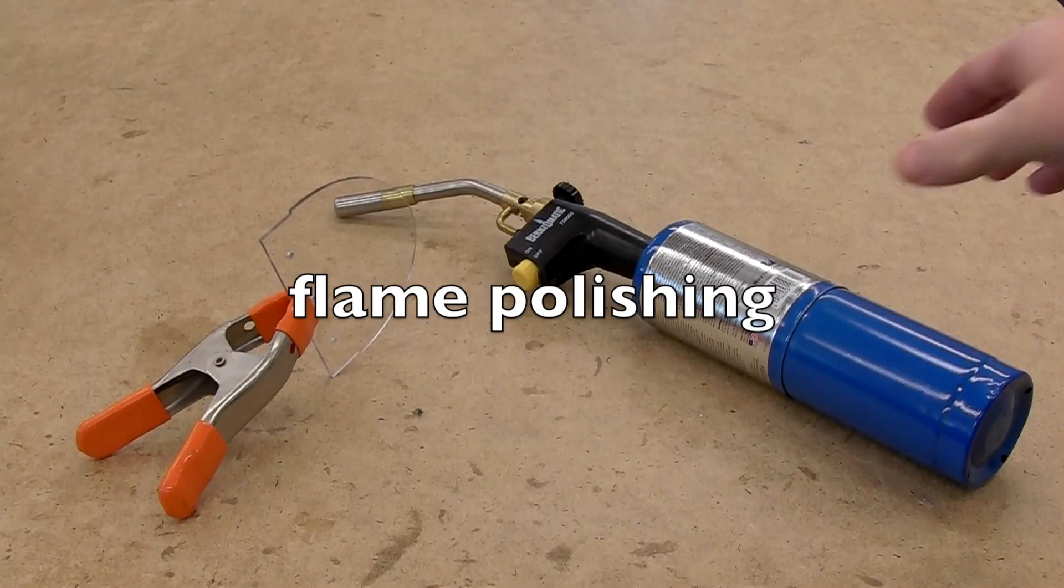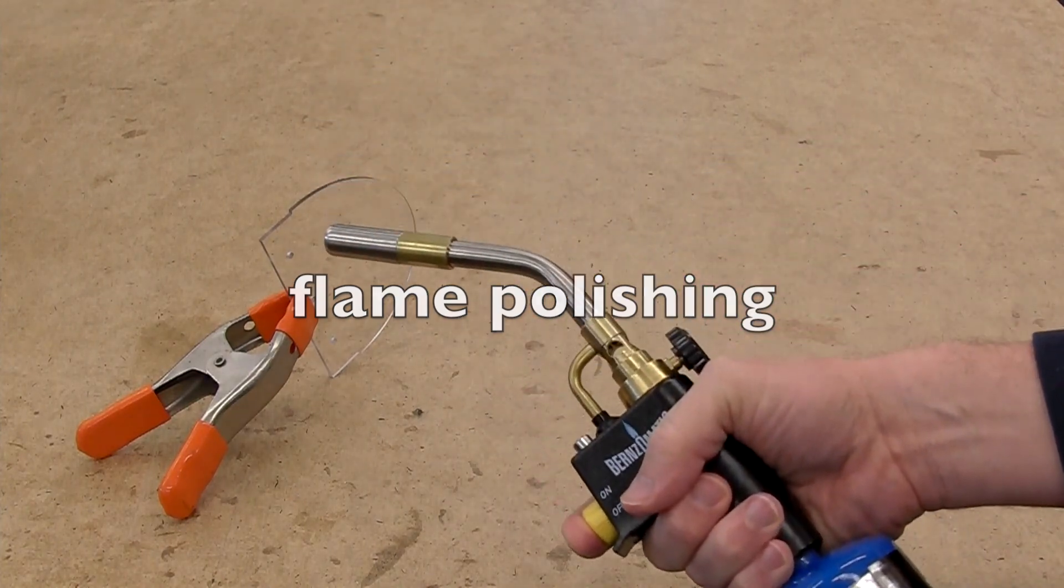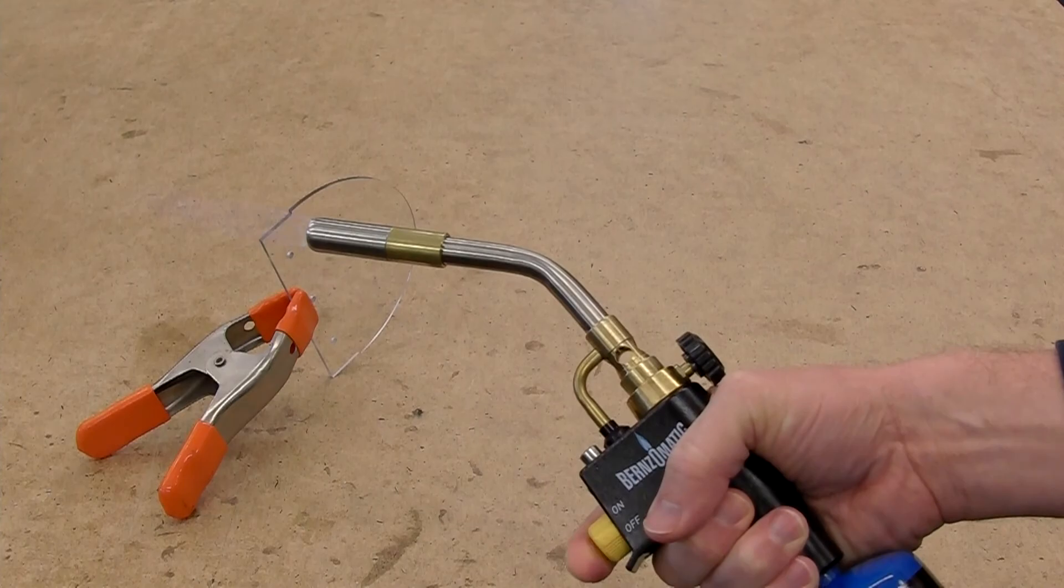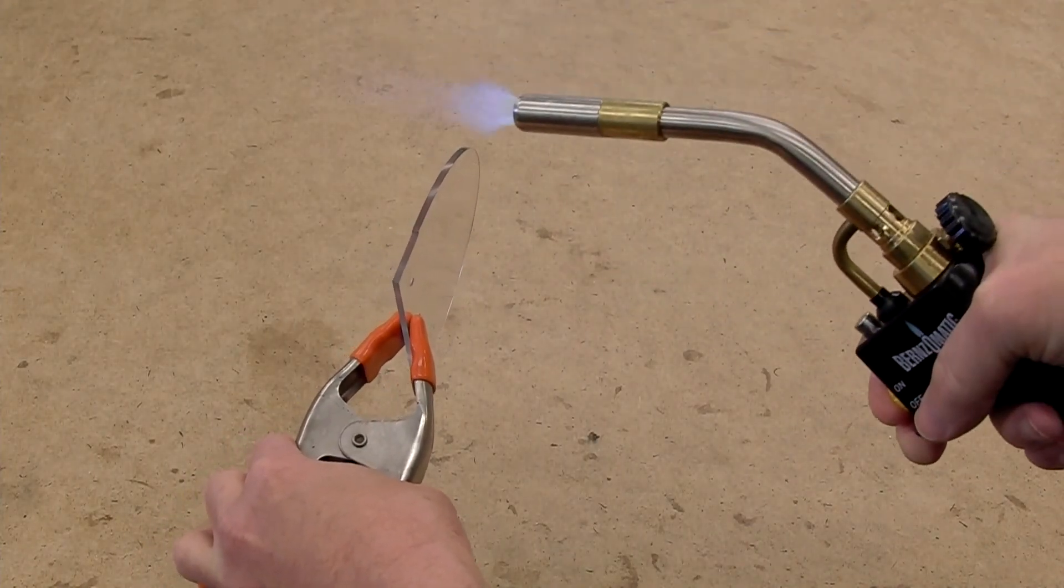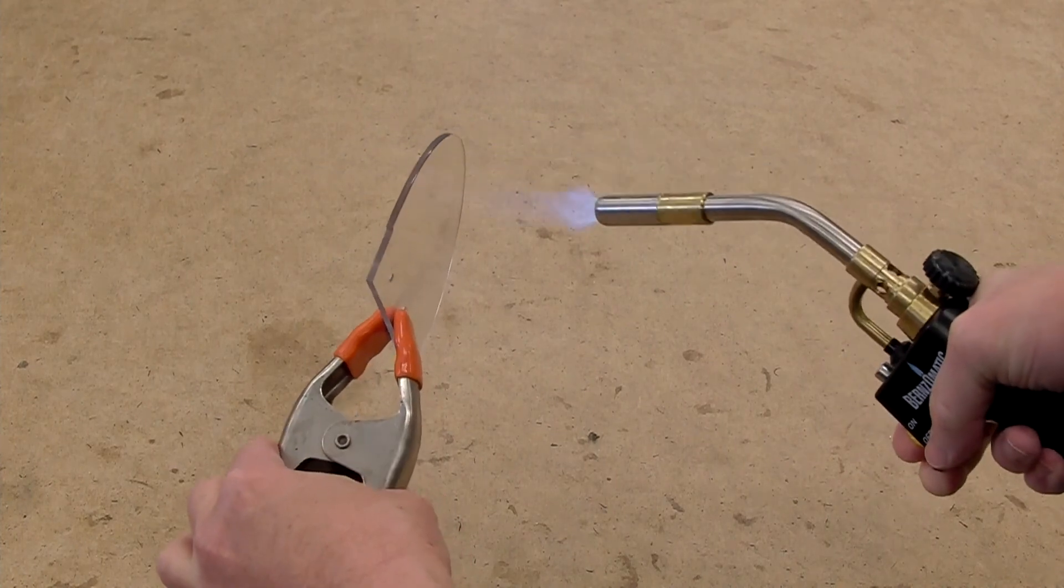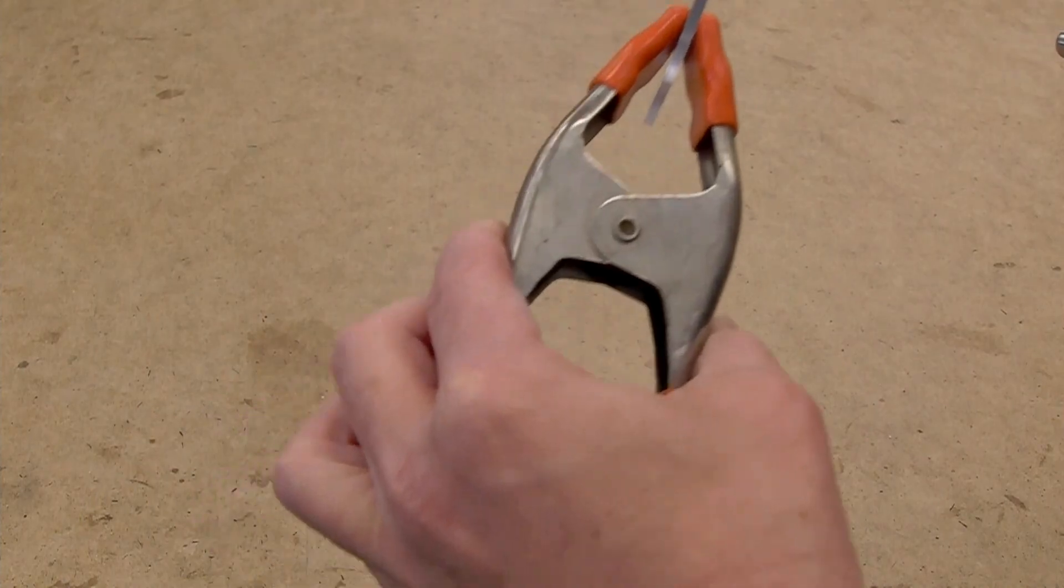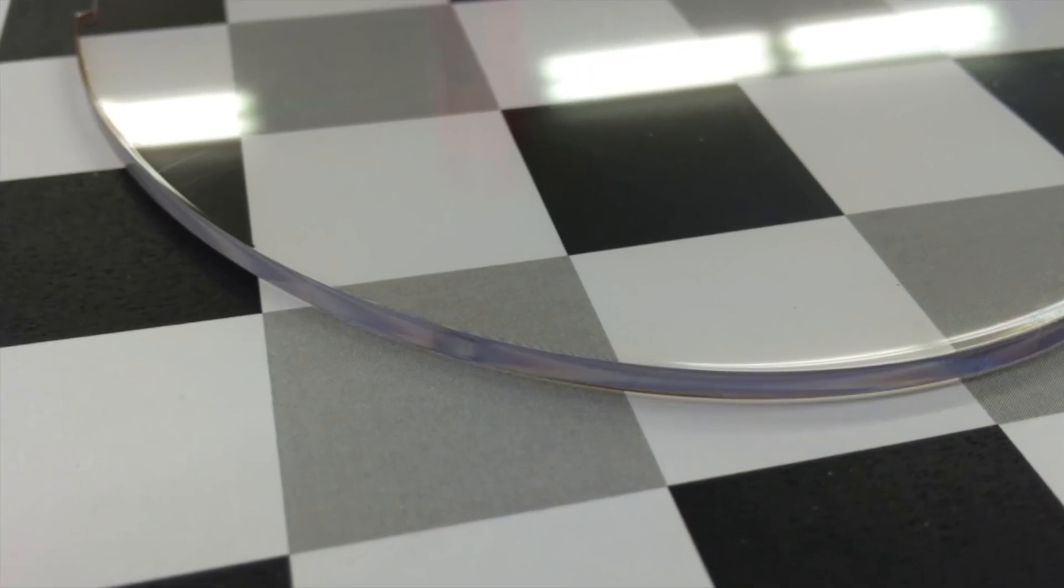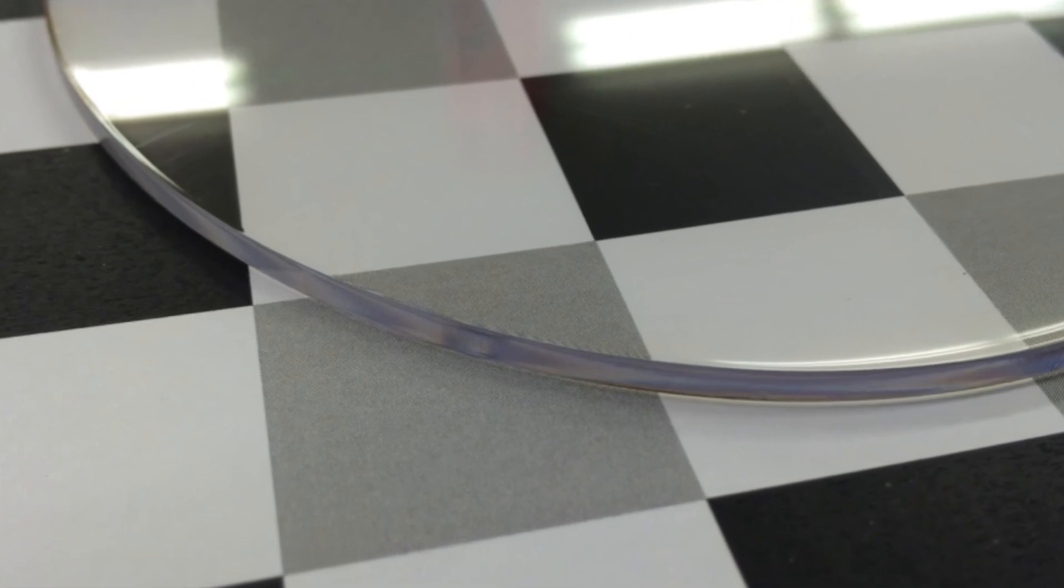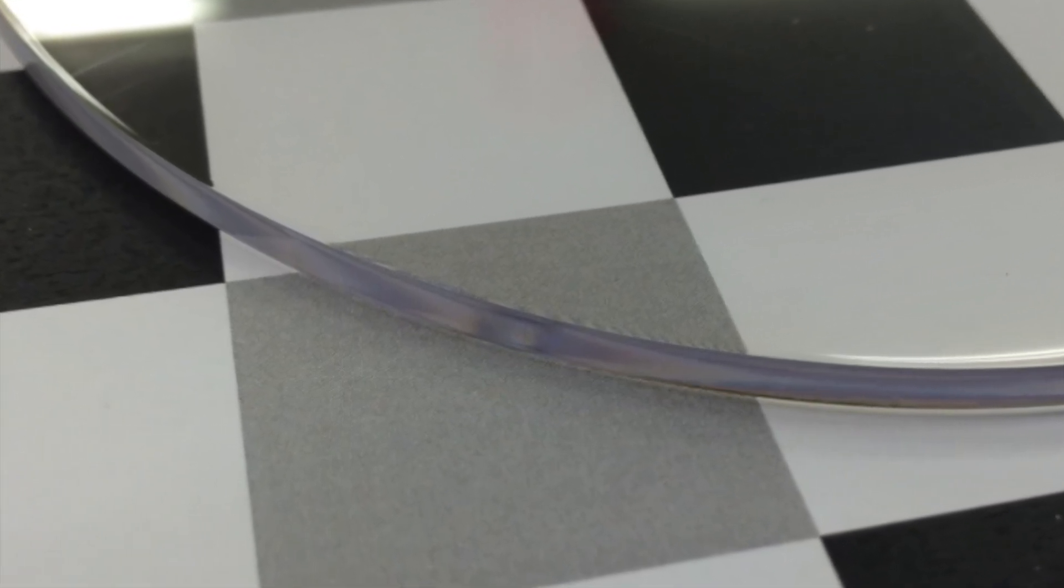Another technique you can use to get the edge even smoother is flame polishing. Use an ordinary propane torch to heat the edge until it slightly melts, forming a smooth surface. Use multiple quick passes to make sure not to overdo it. And here's what you get with flame polishing. The edge is actually melted and re-solidified and so it is slick and you can actually see reflections from the edge of the plastic.